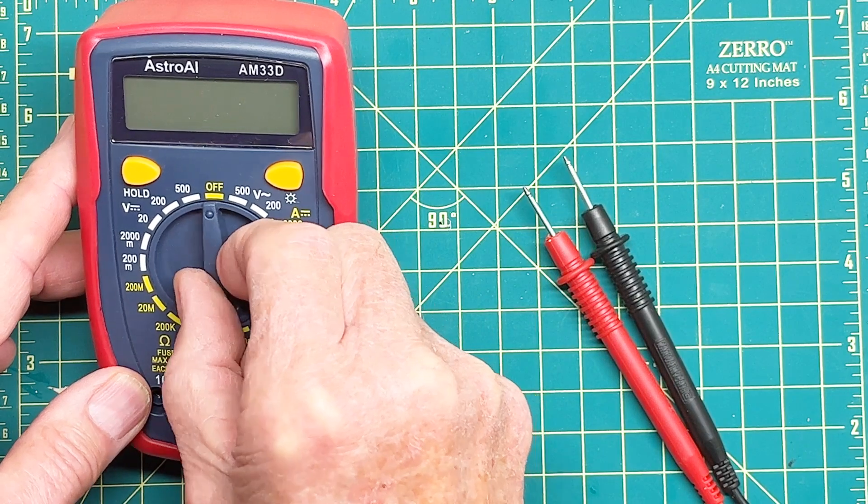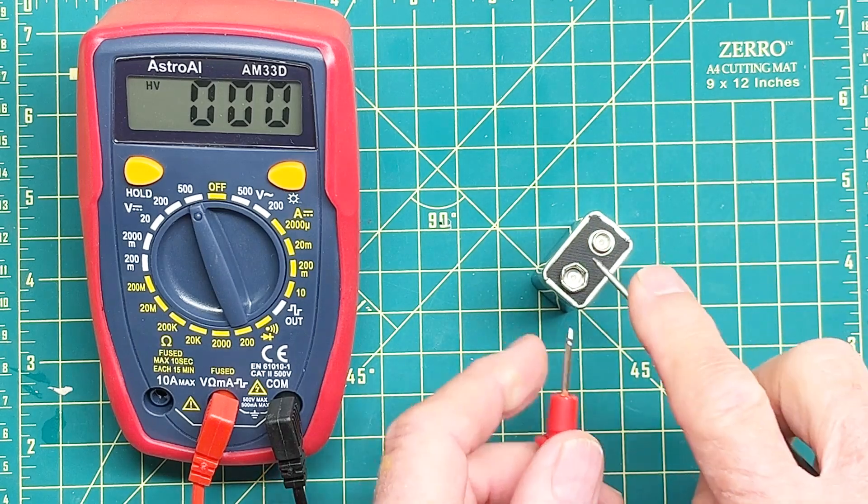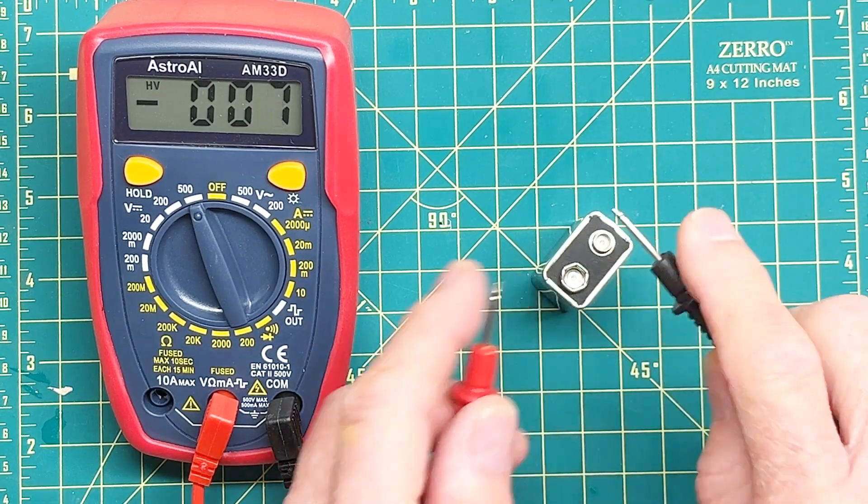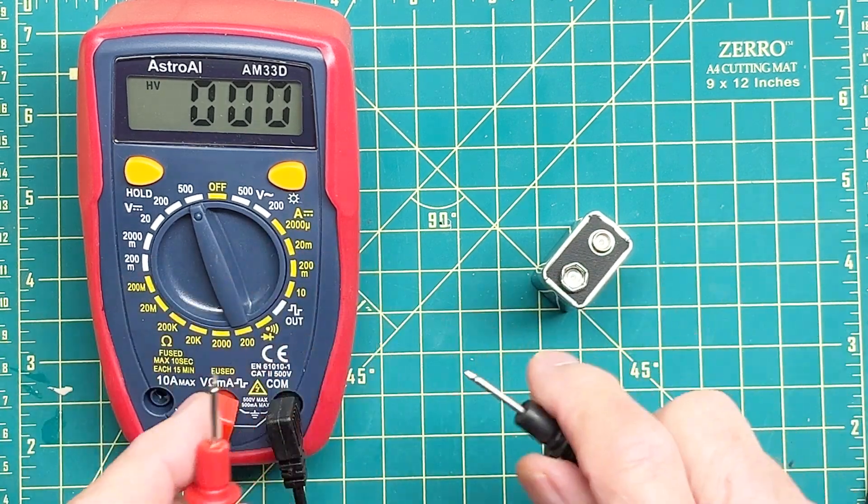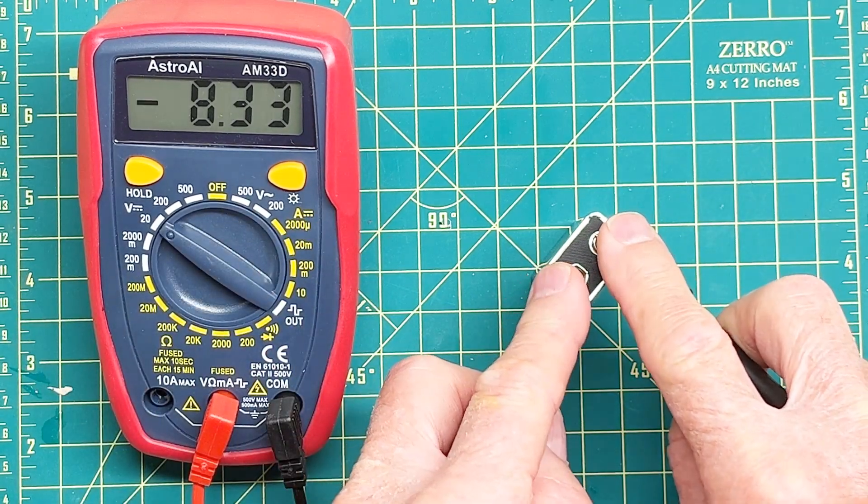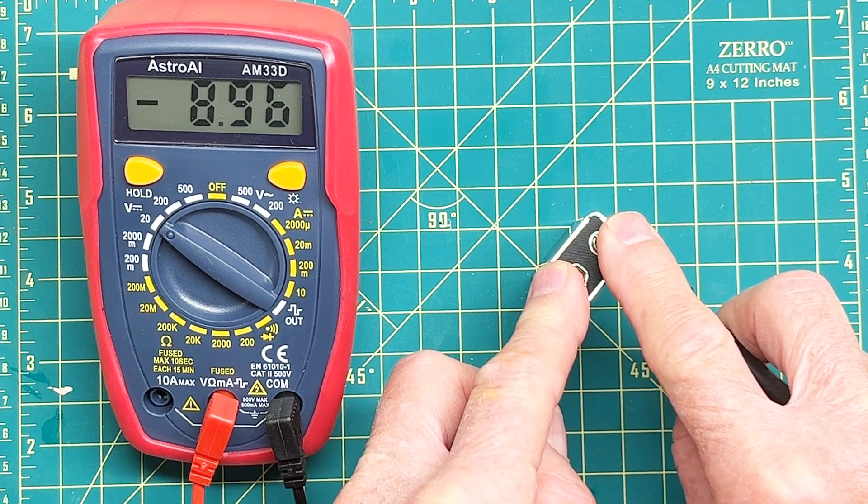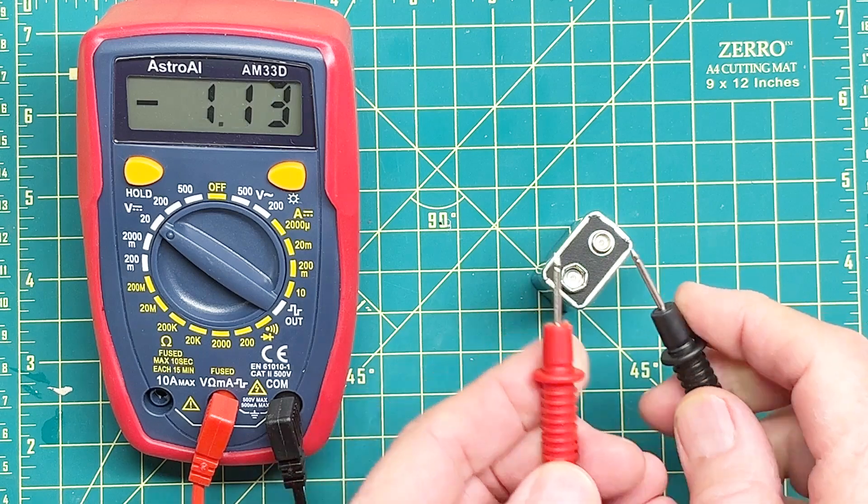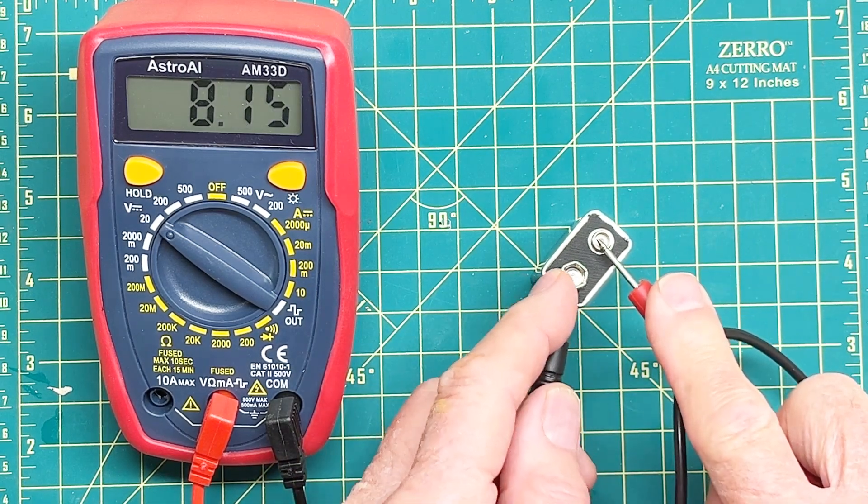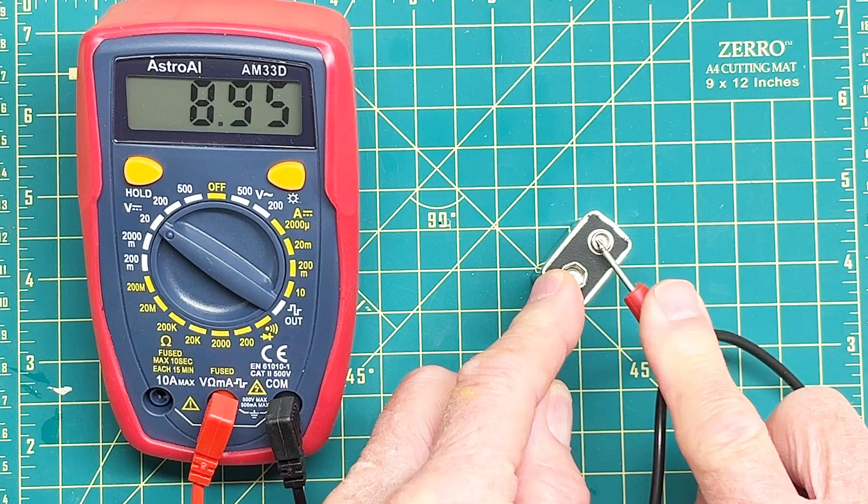So this one, you have to choose your range. See, 500 is not good. Let's try 20. There you go. 8.96. Now I've got these leads in the wrong terminals, so it's red negative. Turn them around, and it's positive 8.96, which is pretty close to what the other one said.